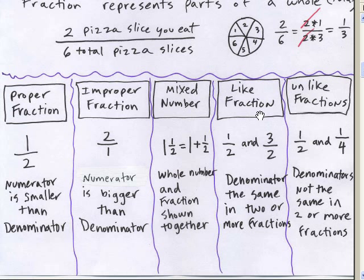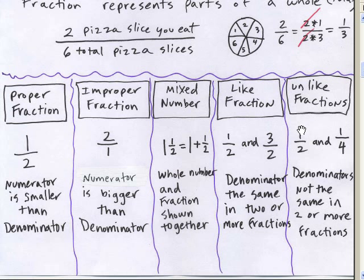Like fractions are the ones where the denominators are the same. Unlike fractions have denominators that are not the same. When we multiply and divide, it doesn't matter if they're like or unlike. It's just when we add and subtract that there are a lot more steps when you have unlike fractions.